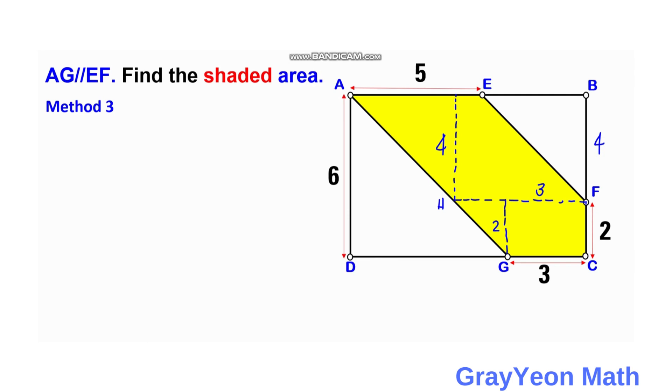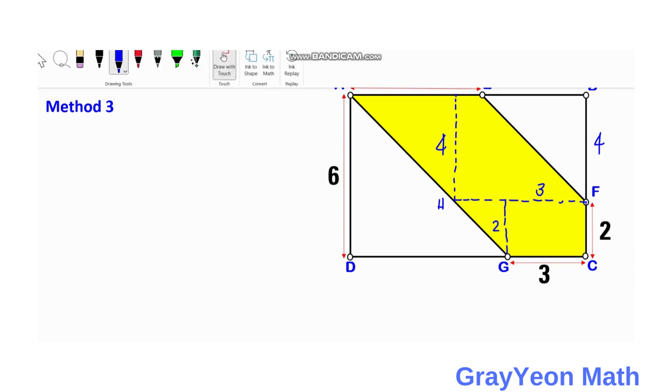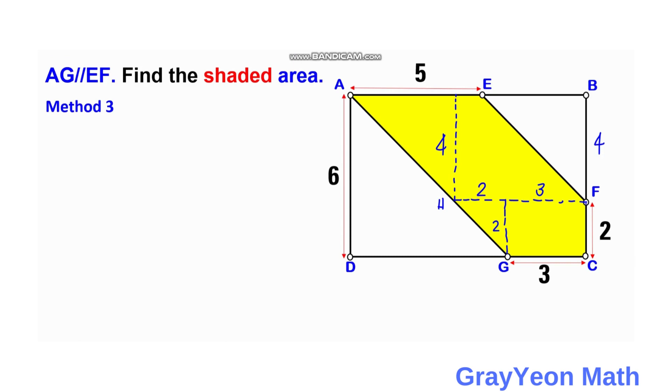And this is also 2 units, 2 units. Because we actually form a parallelogram. So 5 minus this 3 unit length. And this will be 2. And this will be 2.